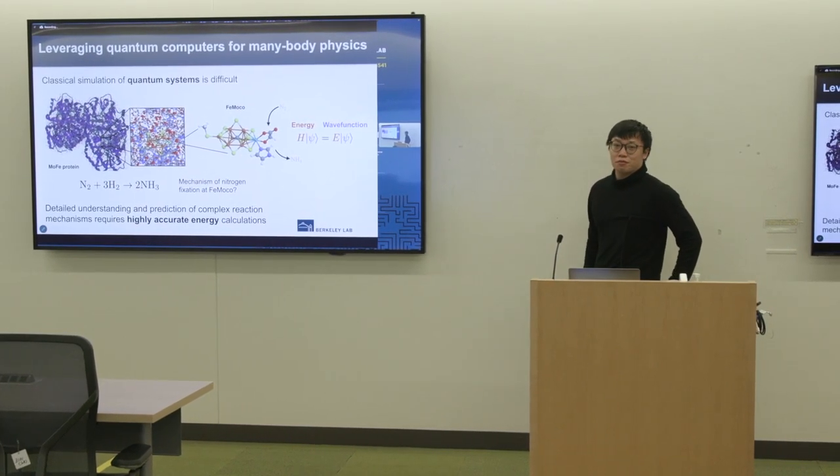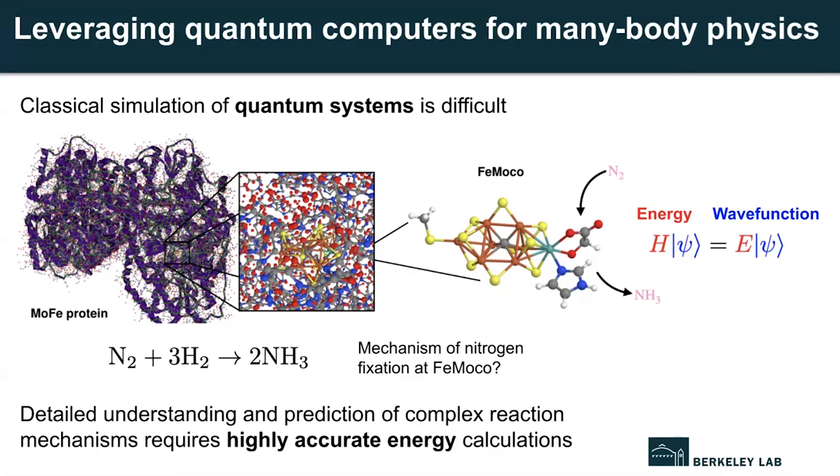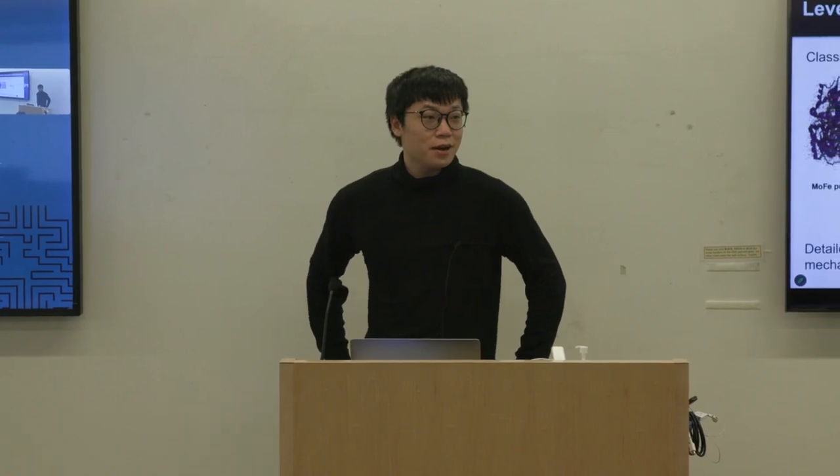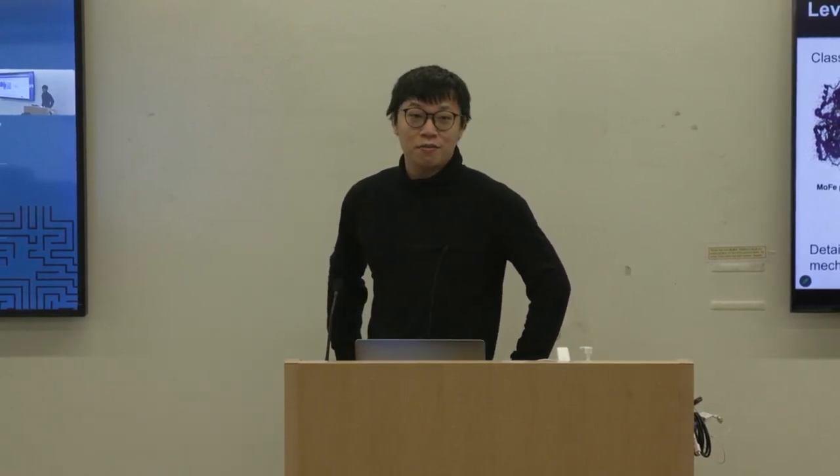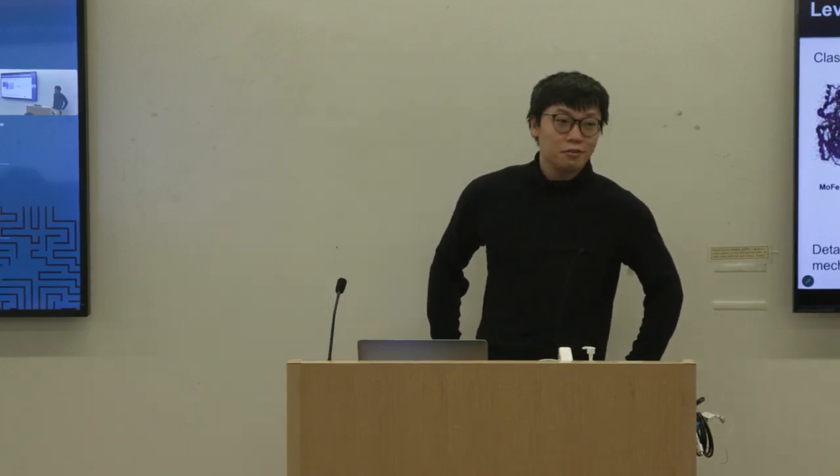This limitation becomes critical for complex systems. In the middle, I'm showing a nitrogen fixation process that converts hydrogen and nitrogen into ammonia. This process occurs with a catalyst called FeMoco. Understanding the reaction mechanism requires knowing the energy configurations of the catalyst itself and the solving of many-body Schrödinger equation.